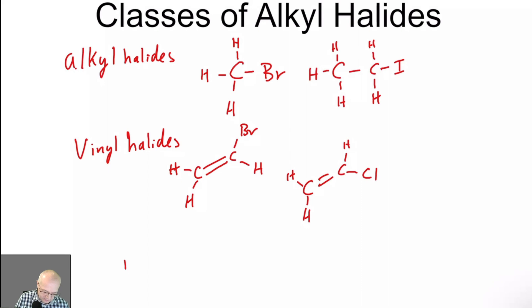There are aryl halides. So there's an aryl bromide, for example. So these are just examples of vinyl, aryl, and alkyl halides. And these are quite common, especially alkyl halides. We're going to be doing quite a bit with them in this chapter and in the rest of the course.